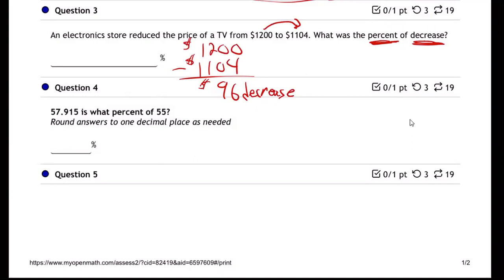Do you have to divide by $1200? Yeah, exactly, good job. Right, you've got to take that 96 and divide by the 1200, because that's what we mean when we say the price dropped 96, it decreased.